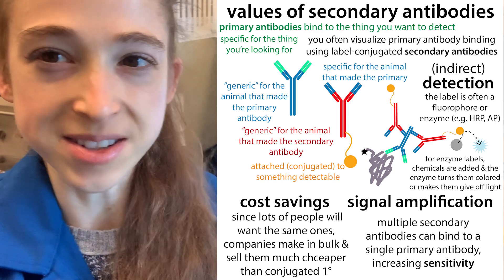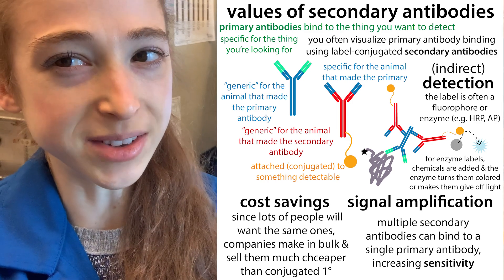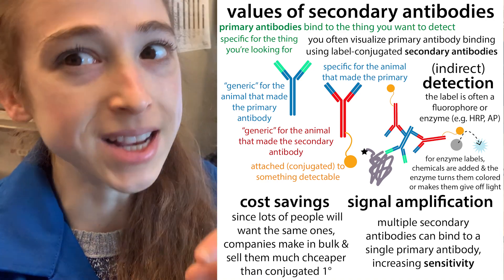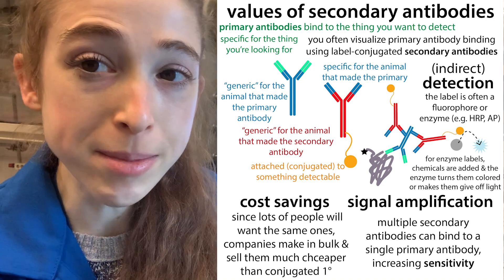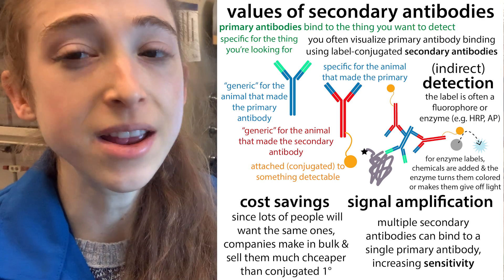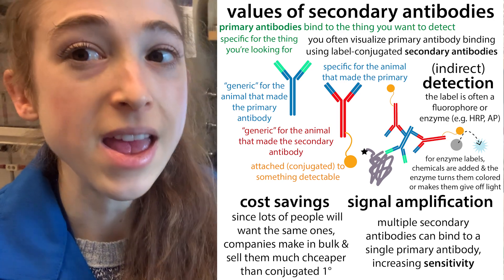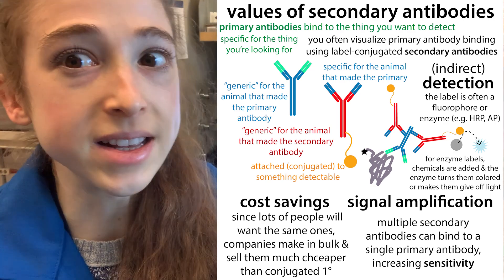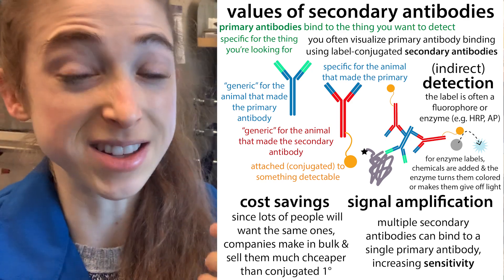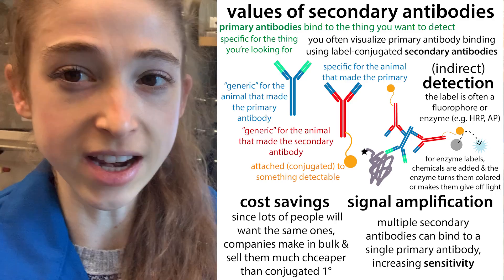I recommend the use of secondary antibodies — and why? Savings and sensitivity. Basically, by using a labeled secondary antibody that binds to a primary antibody that binds to the thing we're really interested in, we can get signal amplification, so we get a stronger signal, and we can save money because it's going to be a lot cheaper than trying to get your primary antibody — the one that binds the thing of interest — to be conjugated.